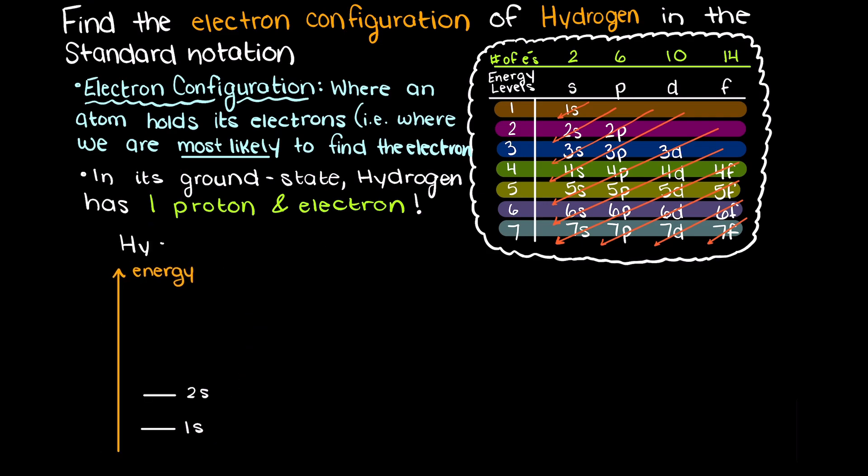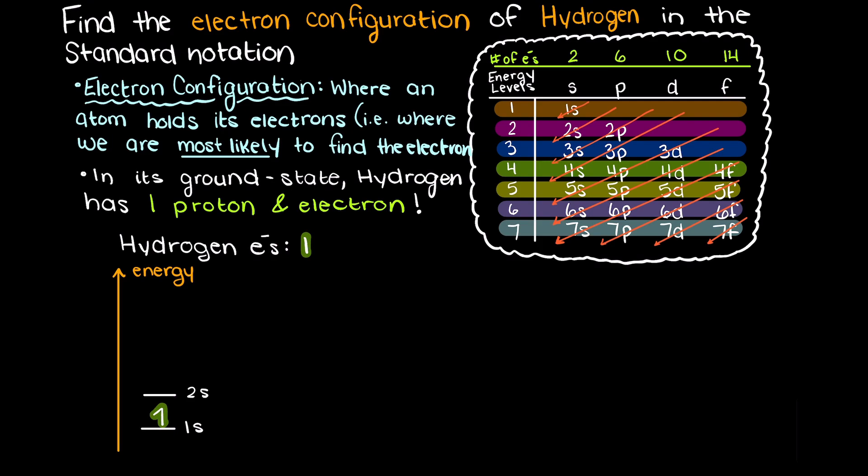Therefore we place our sole electron in this orbital, and we have placed all of our electrons. We can now rewrite the solution like this, and we have just solved for the standard electron configuration notation of hydrogen in its ground state.